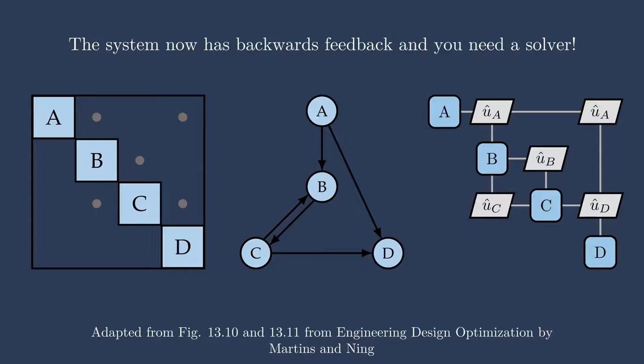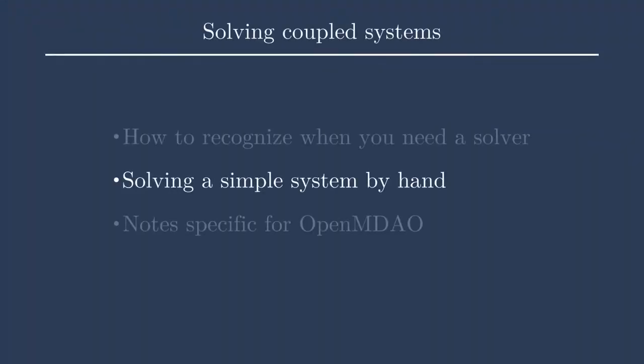Please see the linked lecture about implicit versus explicit components to learn more about what the differences are. For the purposes of this, just know that explicit is something where you can write out an equation to solve for the outputs with respect to the inputs, whereas for an implicit system, you actually need a solver to obtain the state values for that system. So that was a quick look at how to recognize when you need a solver. Now, let's solve a simple system by hand.